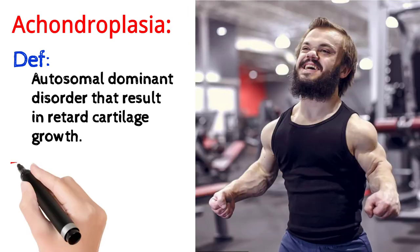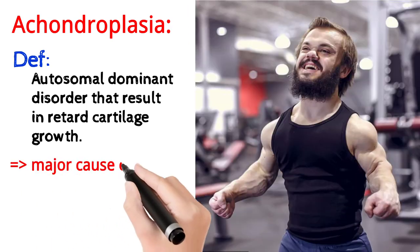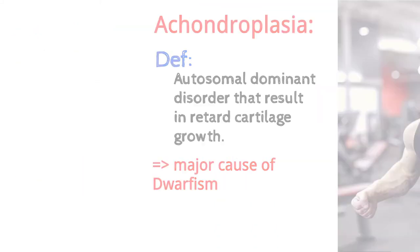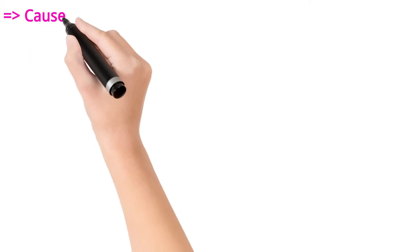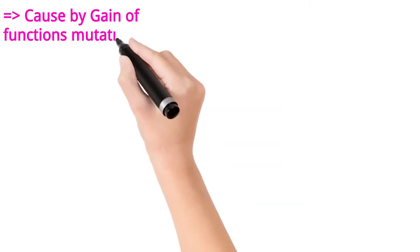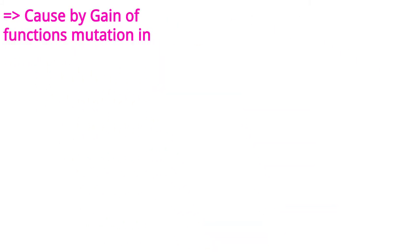Here you can see the picture of the Achondroplasia condition, in which the features remain prominent, and it is one of the major causes of dwarfism. Here you can see the picture of the Achondroplasia condition.